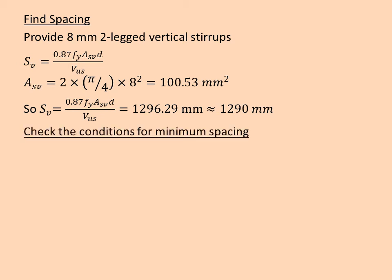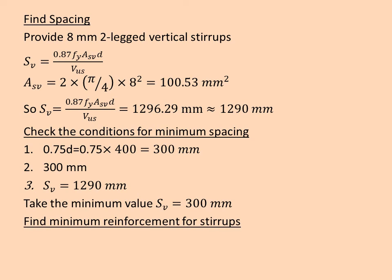Now we check the conditions for minimum spacing. First condition, 0.75·d, we get 300mm. Second condition is also 300mm. And third condition is the spacing that we calculated before. We take the minimum value, that is 300mm. Next, we find the minimum reinforcement for stirrups. Asv minimum should be greater than or equal to 0.4·b·Sv / 0.87·fy, that is 49.85. Let's compare it with the previous value of Asv. Asv provided is greater than Asv minimum. This condition has to be satisfied. Now it is satisfied, so it is safe.